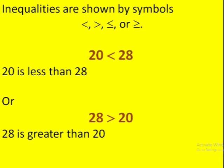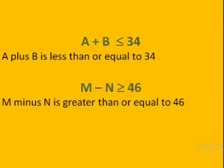And when there is an equality sign below that symbol, for example, the first one: a plus b is less than or equal to 34, meaning the sum of a plus b can also equal 34 or be less than 34.